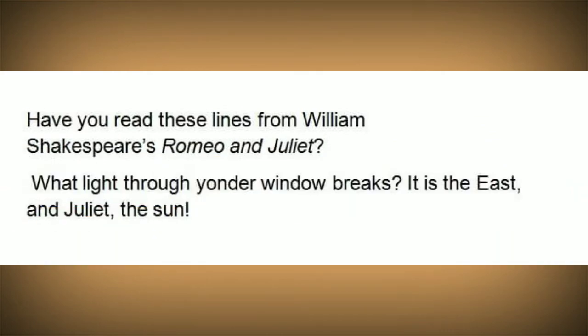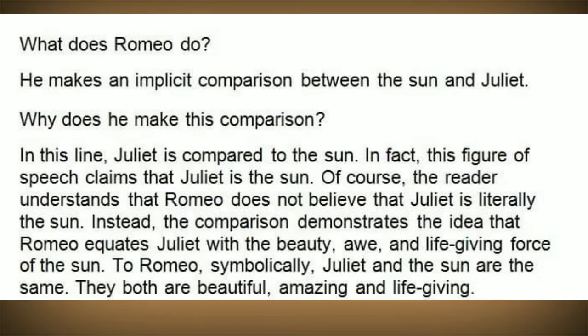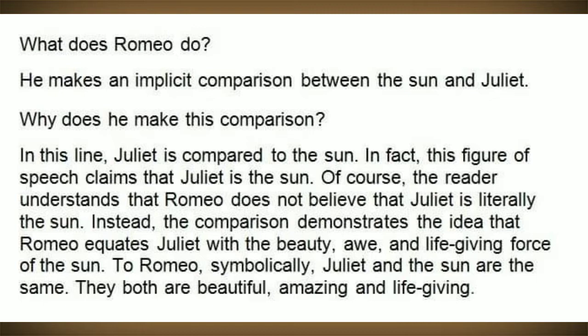Have you read these lines from William Shakespeare's Romeo and Juliet? 'What light through yonder window breaks? It is the east and Juliet the sun.' What does Romeo do? He makes an implicit comparison between the sun and Juliet. Juliet is compared to the sun — in fact, this figure of speech claims that Juliet is the sun. The reader understands that Romeo does not believe that Juliet is literally the sun. Instead, the comparison demonstrates that Romeo equates Juliet with the beauty, awe, and life-giving force of the sun. Symbolically, Juliet and the sun are the same: both are beautiful, amazing, and life-giving.